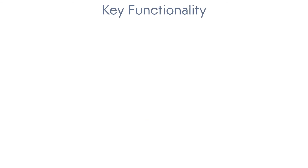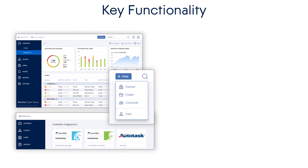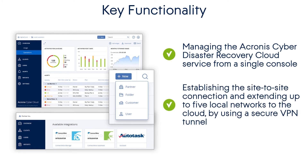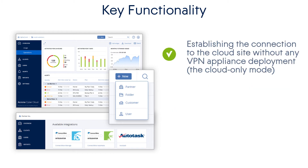The key functionality includes, but is not limited to, managing the Acronis Cyber Disaster Recovery Cloud service from a single console, establishing the site-to-site connection and extending up to five local networks to the cloud by using a secure VPN tunnel, establishing the connection to the cloud site without any VPN appliance deployment — the cloud-only mode.